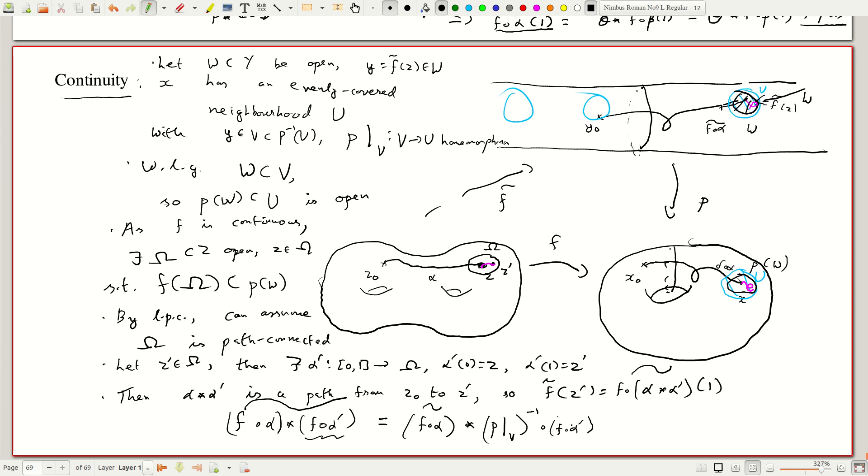So we just compose this. So this applied to 1 is this applied to 1, which is just p restricted to v inverse at f composed with alpha prime of 1.